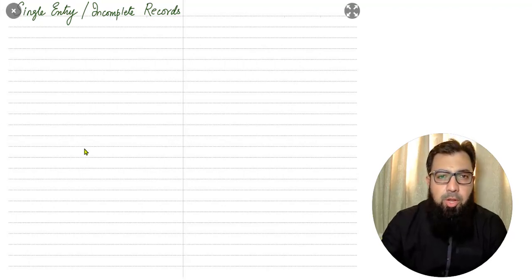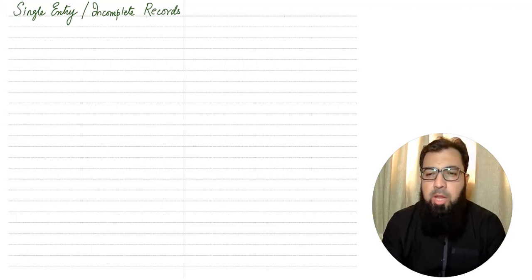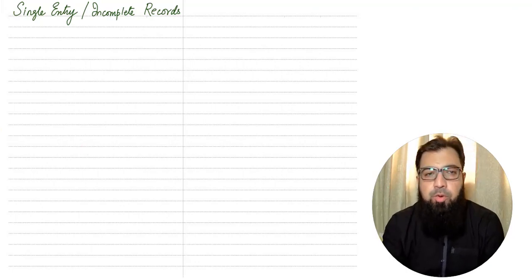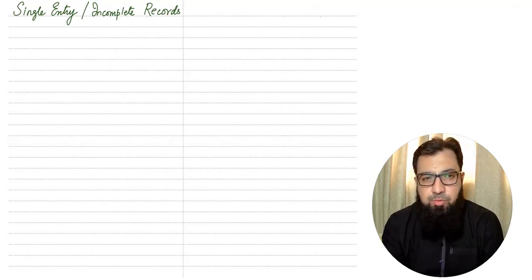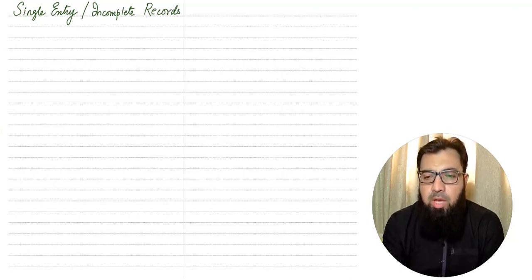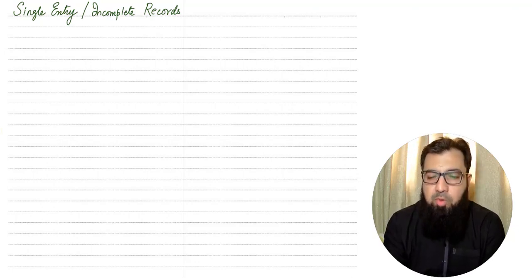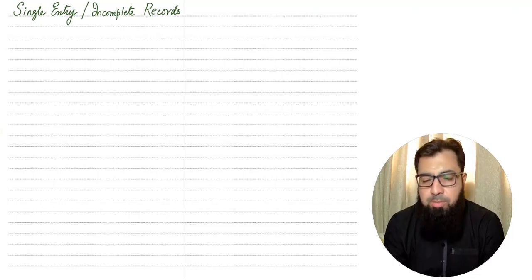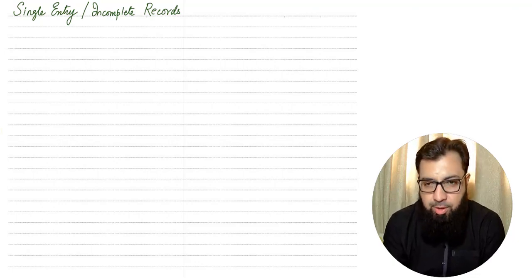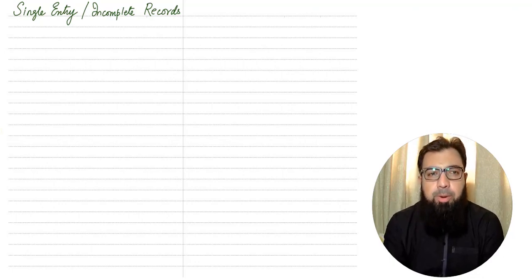Hi there, this is your accounting coach ARD. Today we are talking about single entry incomplete records. Single entry incomplete records refers to a situation where we do not have proper accounting records. There can be two reasons for that: we are a small business and cannot afford to hire a full-time accountant, or we have an accountant but due to some reasons our records have been destroyed. Nevertheless, we need to make accounting records without proper double entry records, which is known as incomplete records or single entry.